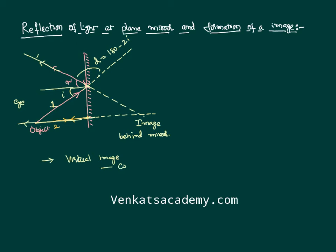What do we mean by a virtual image? We cannot catch it on the screen. But the eye can see it. So it is very clear that a plane mirror gives a virtual image. You also need to know that the location of the object, if it is at a distance x from the mirror, the location of the image is also the same distance. The size is also the same, and the velocities are also the same. But this image is not a real image. There is another kind of image called a real image.